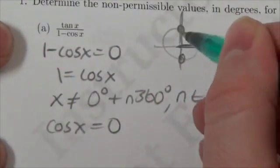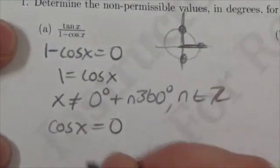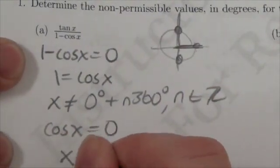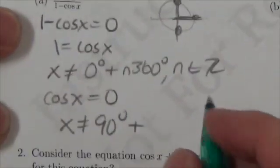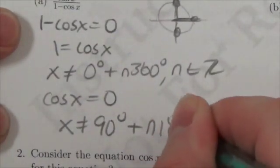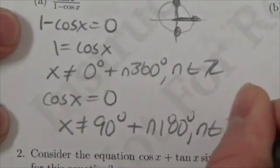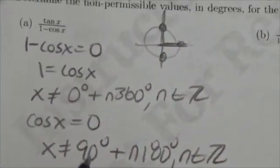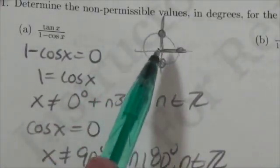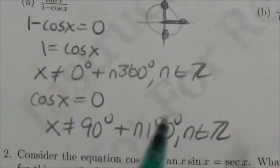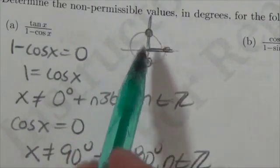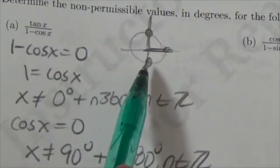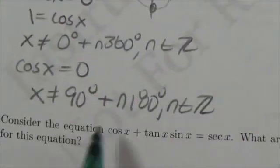Now, because those differ by 180, one side and the other, what I can state here is that x is not allowed to equal 90 degrees plus n times 180 degrees, where n is an element of the integers. I don't need to list them both out. I don't need to say 90 and 270 plus n times 360, although I could, I totally could.